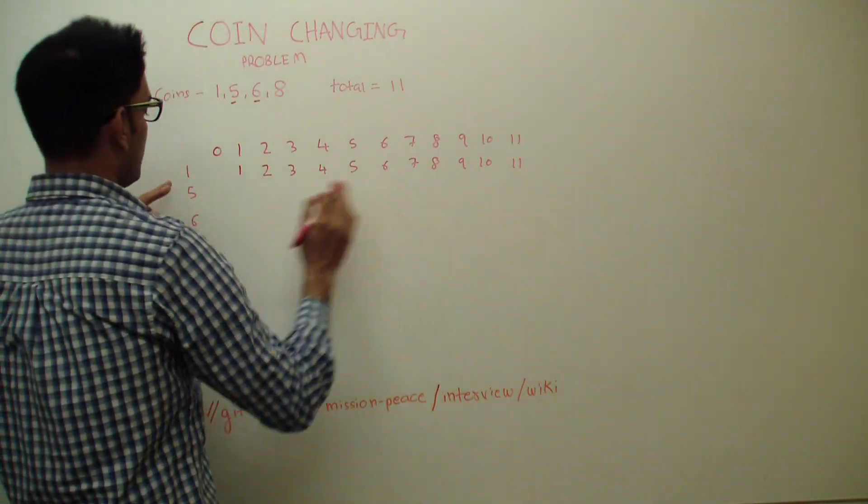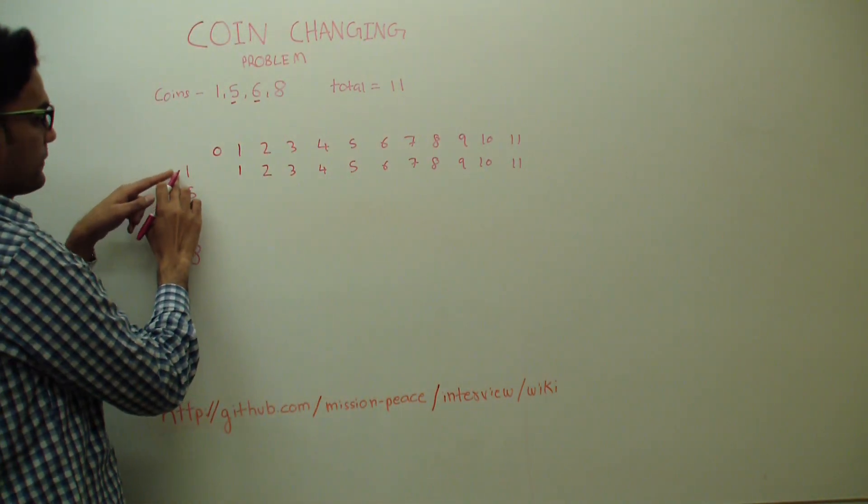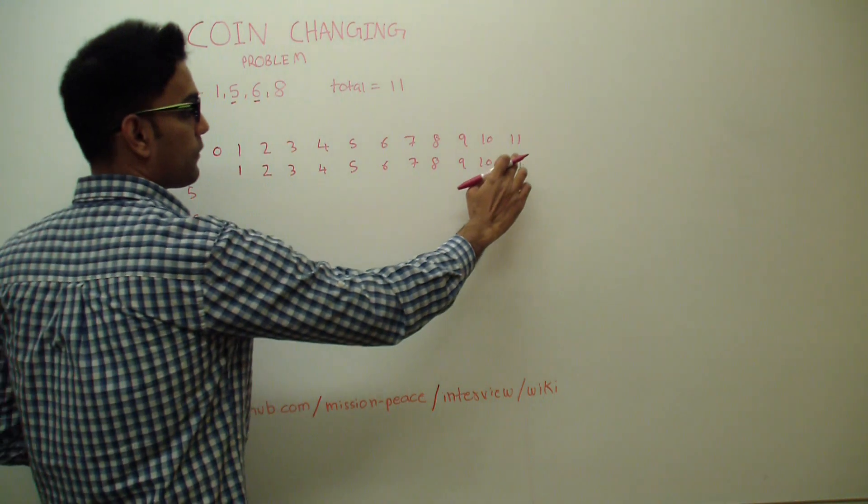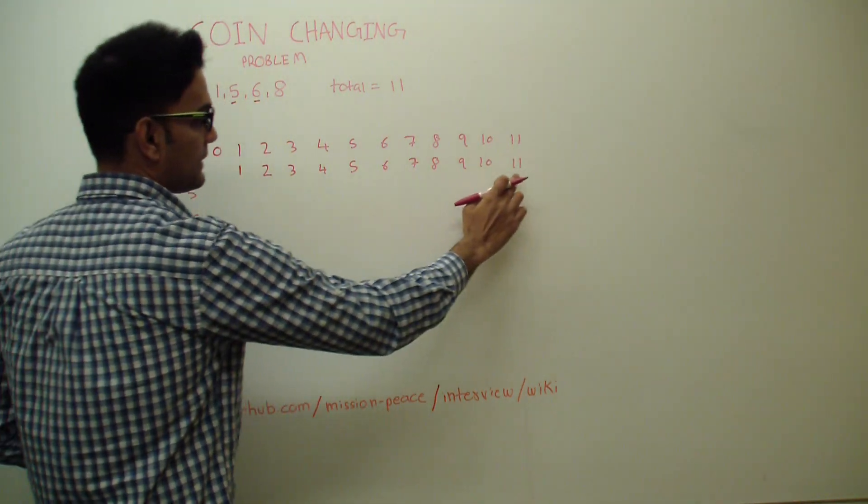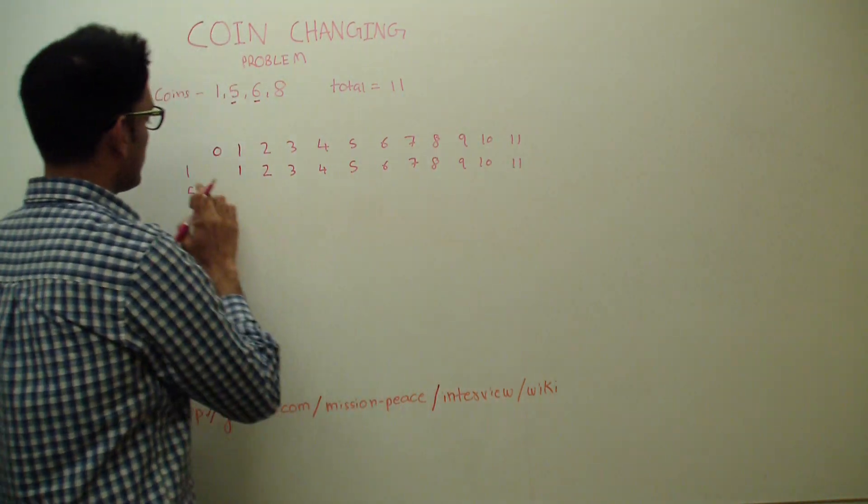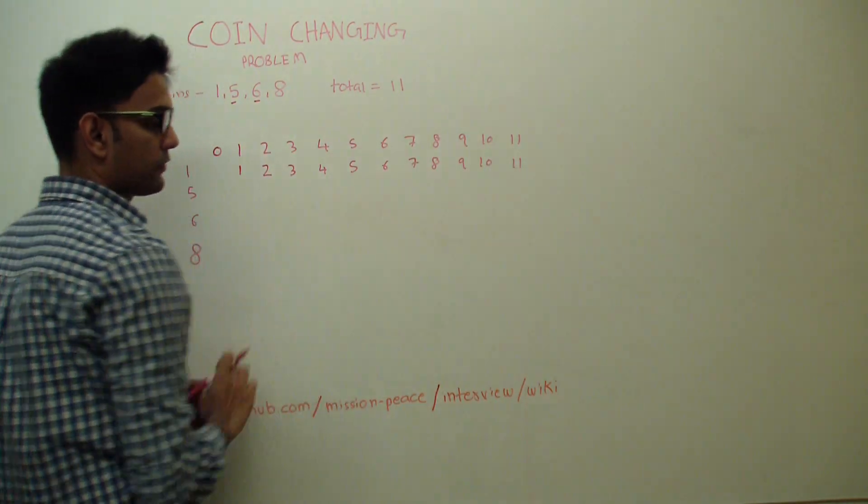So what it means is, if you just had 1 coin of denomination 1 and if you want to get 11, we'll need exactly 11 coins of 1. So this is what this first row is presenting.